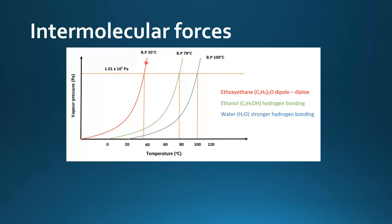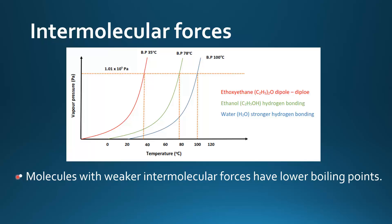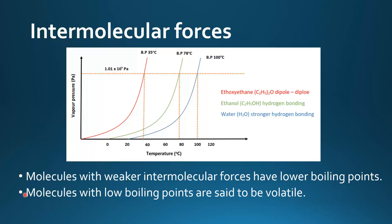Ethoxy ethane has the weakest intermolecular forces of the three, therefore it has the lowest boiling point. Next is ethanol — it has the second highest boiling point because it has the second strongest intermolecular forces. And water has the highest boiling point because it has the strongest intermolecular forces. So molecules with weaker intermolecular forces have lower boiling points. Molecules with low boiling points are said to be volatile.